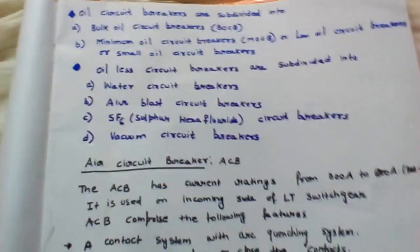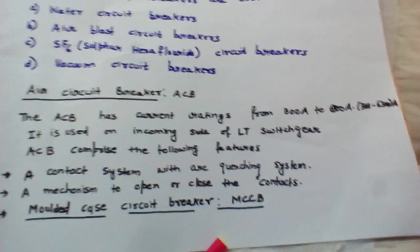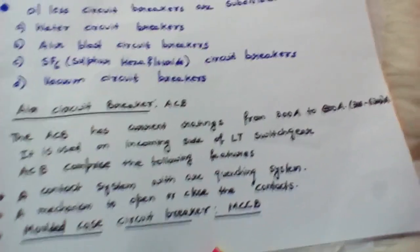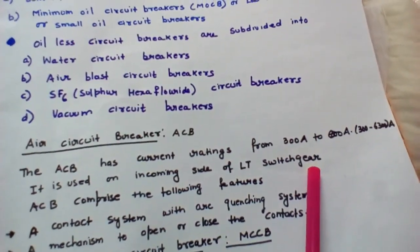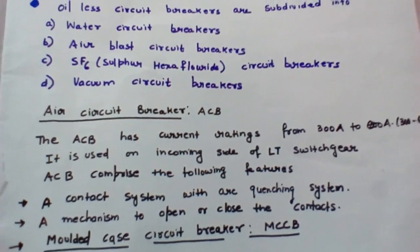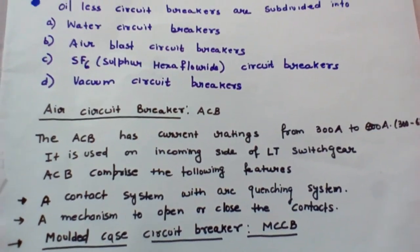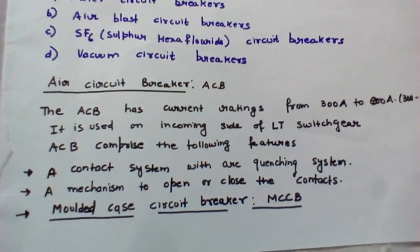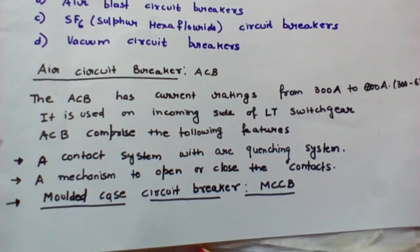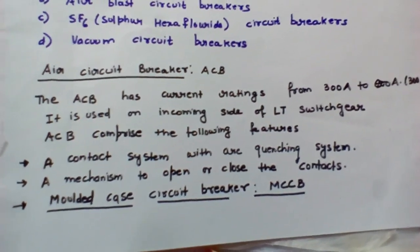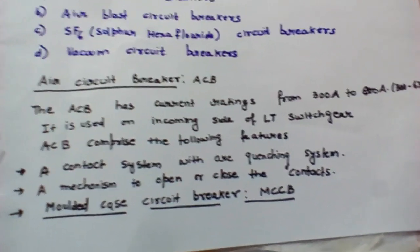Now let us start with the technical features of the air circuit breaker, which is a low tension circuit breaker. As you can see on the screen, the current rating of the air circuit breaker is from 300 to 6300 amps, and it is usually used on the incoming side of the LT switchgear. It has a contact system with arc quenching, and the contacts can be opened and closed manually or automatically. Normal air is used as the extinguishing medium between the contacts.